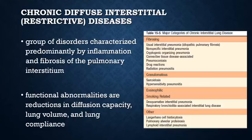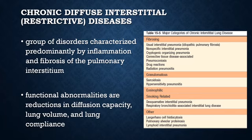Restrictive lung disorders occur in two general conditions. One will be in chronic interstitial and infiltrative disease such as pneumoconiosis and interstitial fibrosis of unknown etiology. The second will be chest wall disorders such as in those with neuromuscular diseases or pleural diseases. Chronic interstitial pulmonary diseases are a heterogeneous group of disorders characterized predominantly by inflammation and fibrosis of the pulmonary interstitium. The functional changes are those of restrictive lung disease. Patients have dyspnea, tachypnea, and inspiratory crackles and eventual cyanosis without wheezing or other evidence of airway obstruction. Diffuse restrictive lung diseases are categorized based on histology and clinical features.